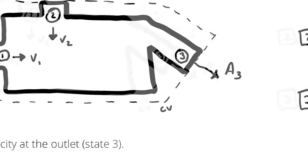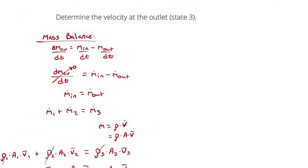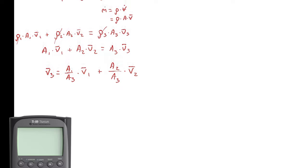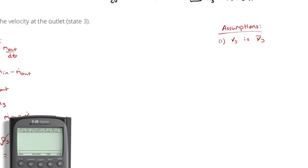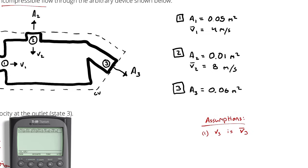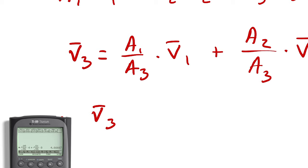Now I know all of those quantities. I have cross-sectional areas of 0.05, 0.01, and 0.06 for states 1, 2, and 3 respectively, and I know the average velocities at states 1 and 2. Using the calculator: (0.05/0.06)×4 + (0.01/0.06)×8. Therefore my answer is 4.6̄ meters per second — that's the average velocity at state 3.